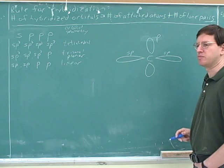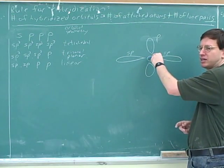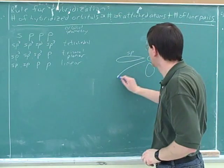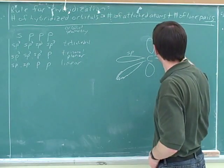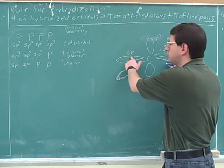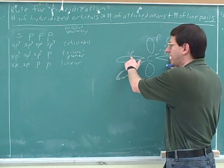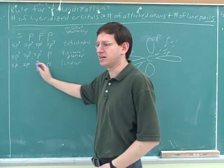And where would the second p orbital be? That would be hard to draw, but that would be perpendicular to the page, coming into the page and out of the page. And perpendicular to these. So what's the angle between these two sp orbitals? 180. Yeah, linear 180. And the angle between the p orbitals and anything else would be 90 degrees.